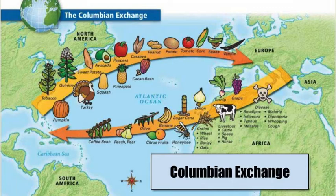Europeans also encountered foods they had never seen before in the Americas: pumpkins, tobacco, quinine, avocados, potatoes, beans, peanuts, tomatoes, corn, and vanilla — and they introduced them into Europe for the first time.